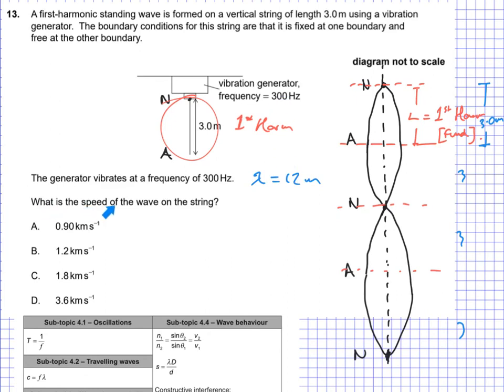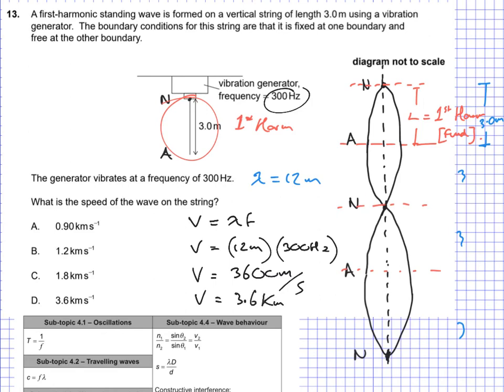We're asked to find the speed of the wave on the string. Hopefully you can see our universal wave equation, which in this case would not be c because that's the speed of light, but just our universal wave equation. In other words, v of the wave is lambda frequency - the wavelength times the frequency. Now it's pretty straightforward. We're going to go 12 meters multiplied by the frequency, which is 300 hertz. That gives us a speed of 3,600 meters per second, or in other words, a speed of 3.6 kilometers per second. So our answer is D.